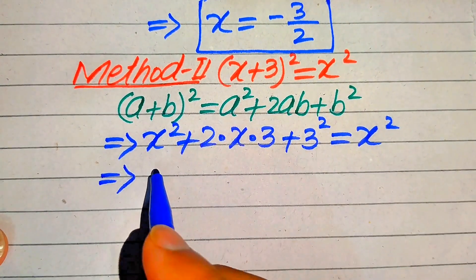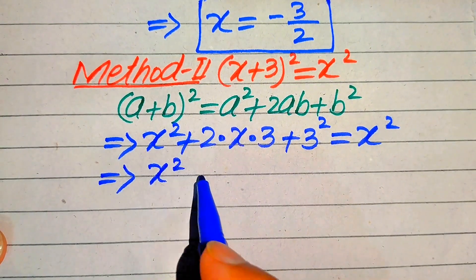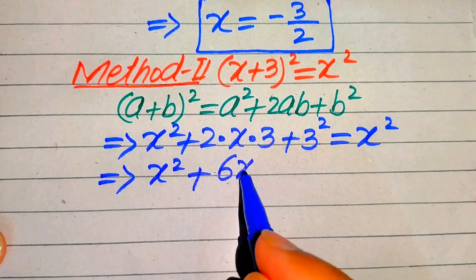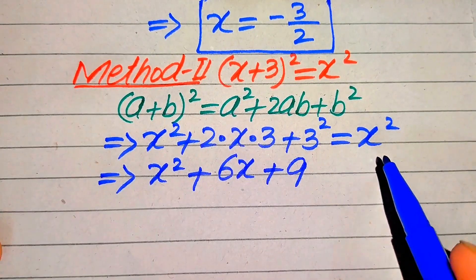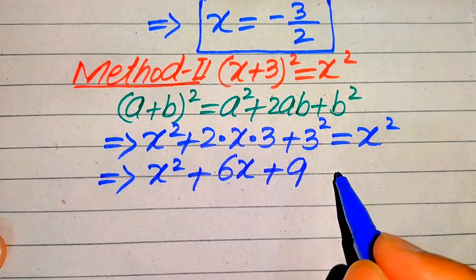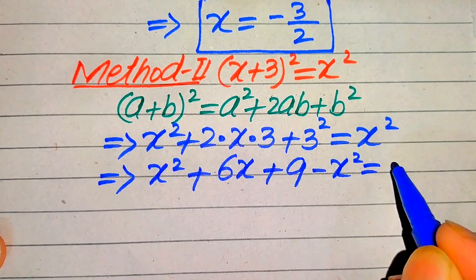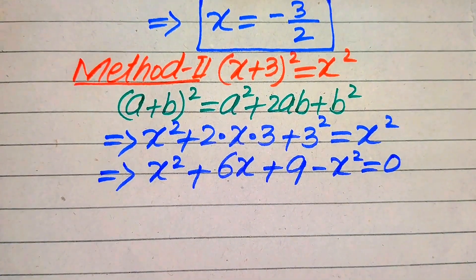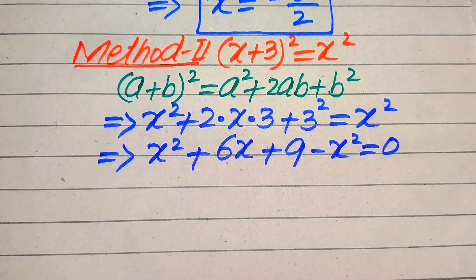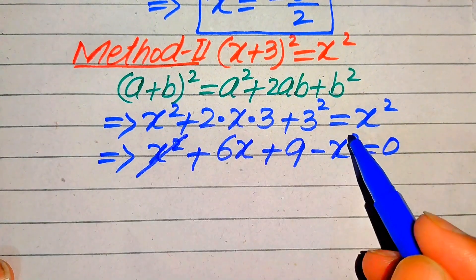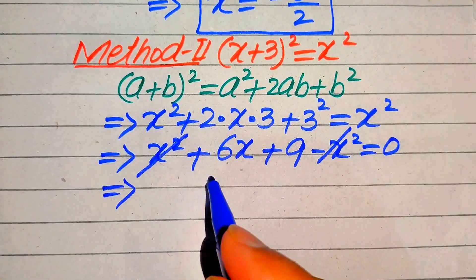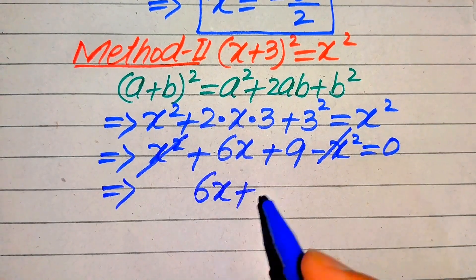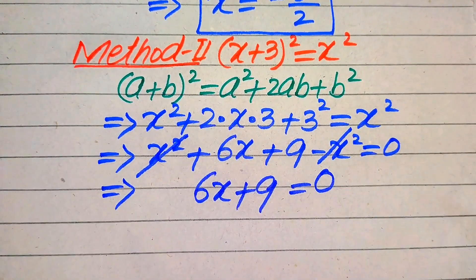Simplifying, we get x² + 6x + 9 = x². Moving x² to the left hand side it becomes minus x², and the equation equals 0. The positive x² and negative x² cancel, leaving 6x + 9 = 0.